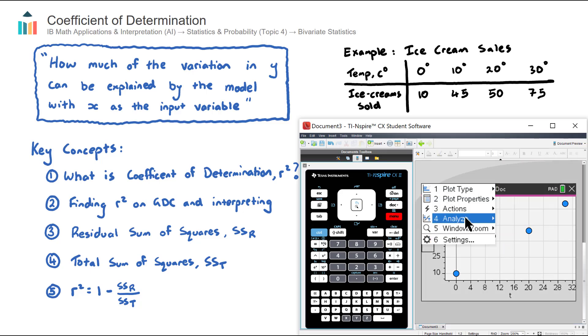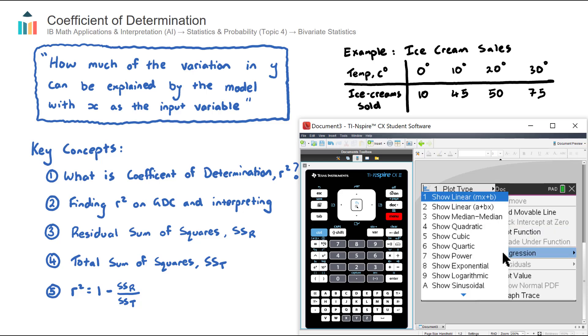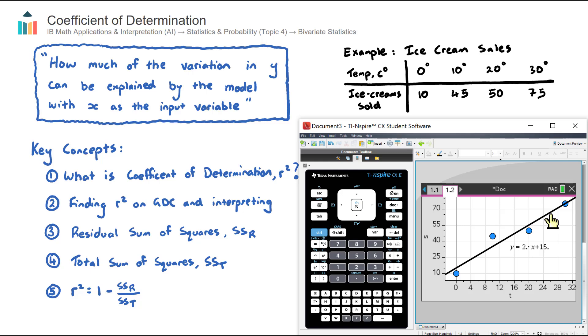Let's now overlay the line of regression equation. So we can go menu, number four, analyze, number six, regression, and we go show linear MX plus B. And there we have our line of regression equation. And we can see that the data points are pretty close to the line, so therefore this line quite nicely represents the data.